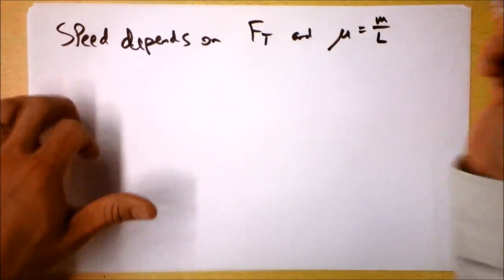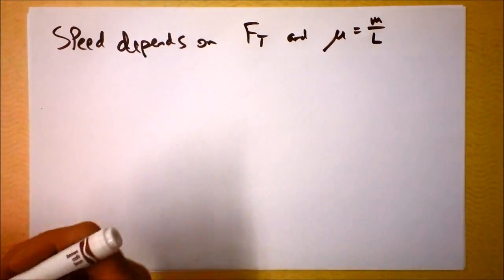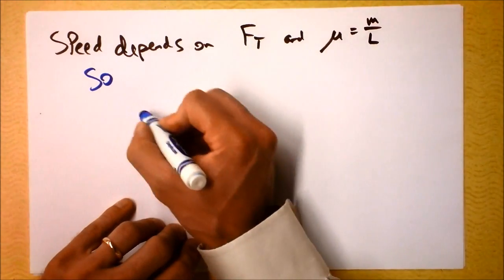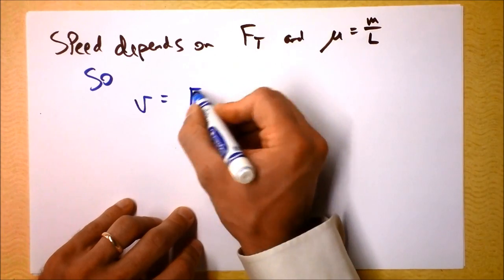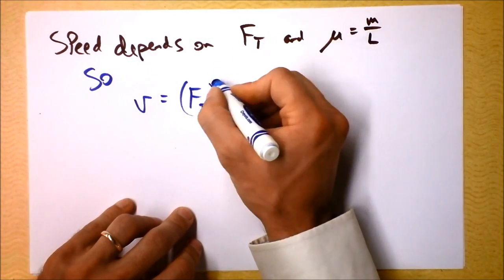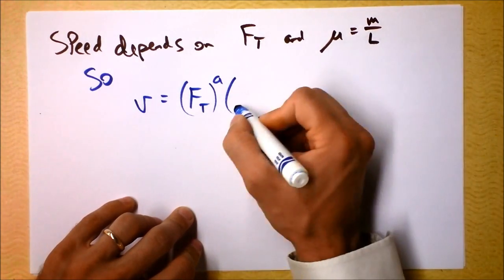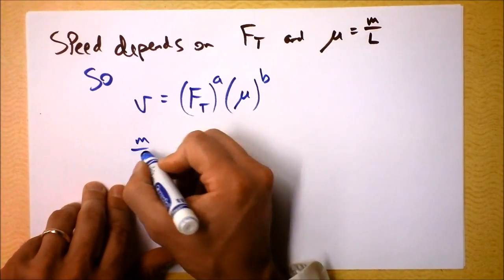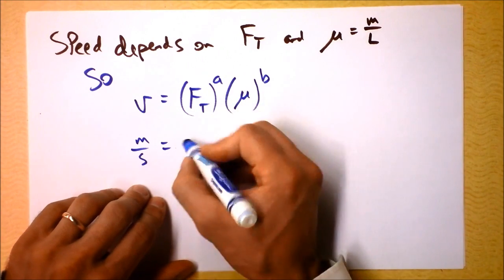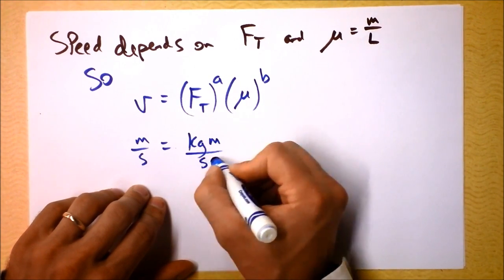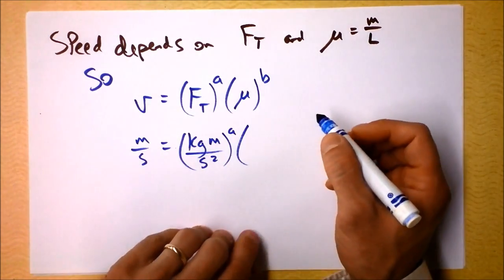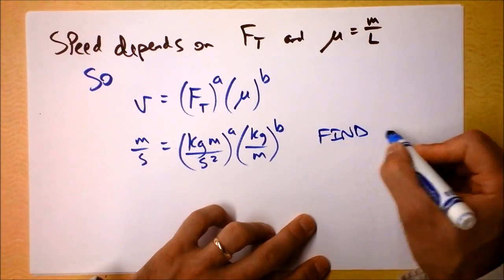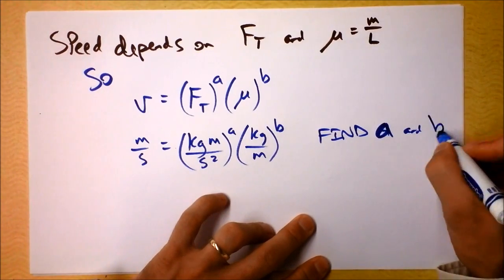Speed depends on tension force and mu, which is mass per length, and I argue we can find this by dimensional analysis alone. We say V equals the force of tension to some power a, multiplied by mu to some power b, and we need the units to work out. So: meters per second equals newtons — which are kilogram meters per second squared — to the power a, times kilograms per meter to the power b.